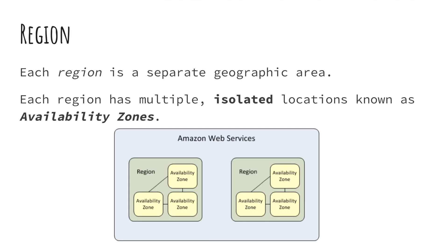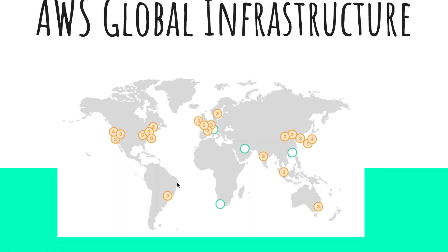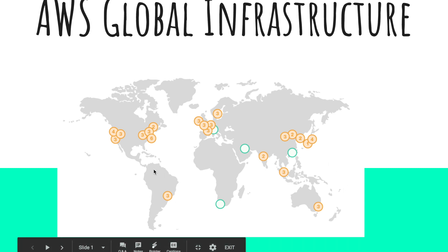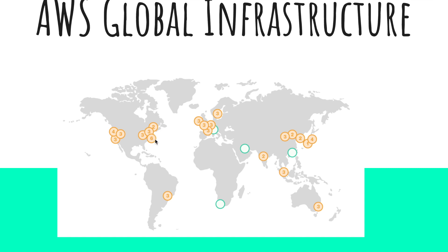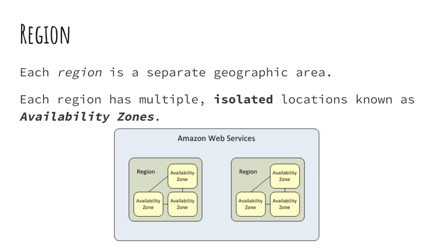So what is a region? A region is just a separate area in the world. Going back to this slide, you can see that each region is separate from each other. Although they might look clustered, they are still hundreds of miles apart. This one is in Canada, and this one is in Northern Virginia, near Washington D.C. in the United States. So each region is a separate geographic area.